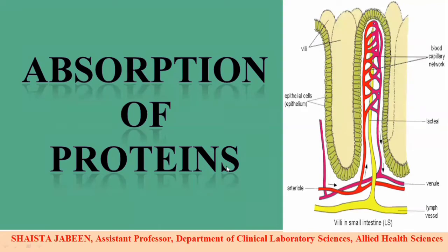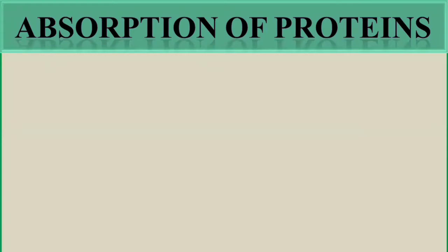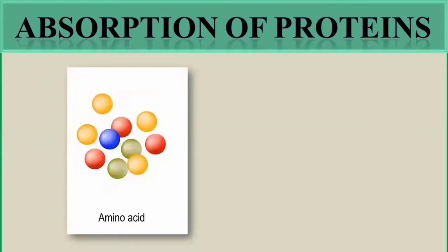Proteins are taken up by the human body in the form of food from different food sources. They pass through the digestive system where complete digestion of protein takes place. The final products of protein digestion are amino acids — the building blocks of proteins. Amino acids link together through peptide bonds and through different conformational changes to form the structure of a protein.